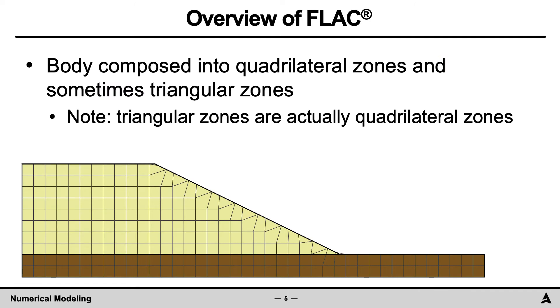In FLAC, the domain, such as the slope here, is composed of quadrilateral zones and sometimes triangular zones as well. Two example zones are highlighted here, a nearly square zone and a triangular zone. It is important to note that the triangular zone is in fact a quadrilateral zone with a node between two nodes located along the triangle's vertices. This fourth node is poorly constrained.